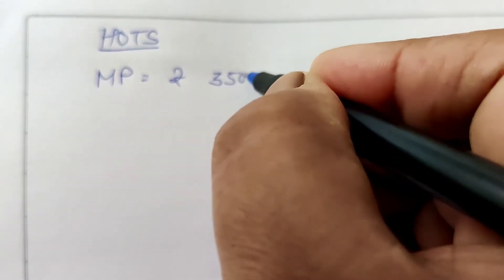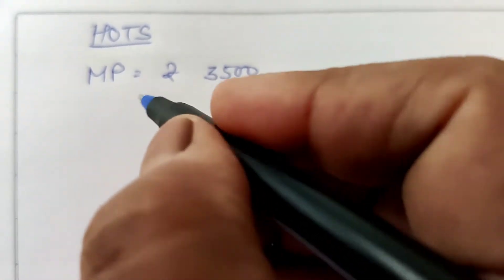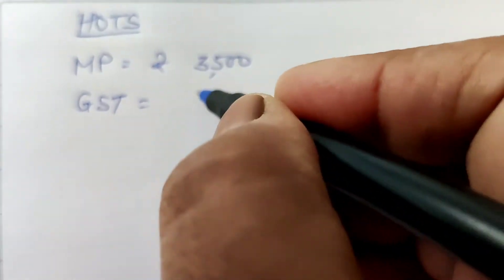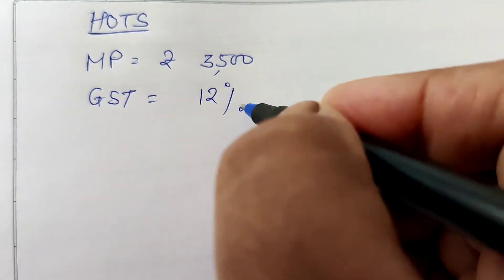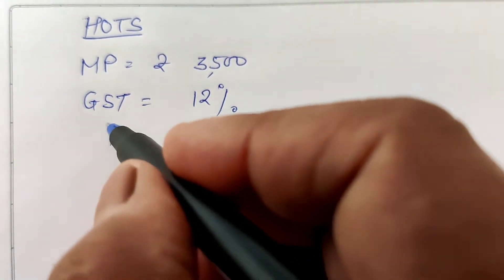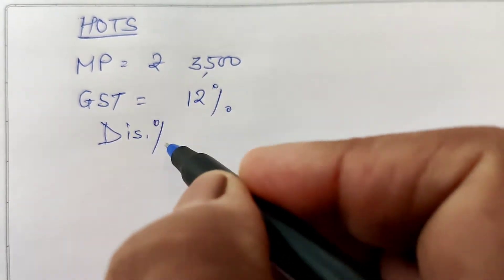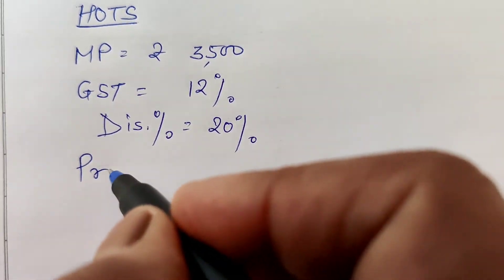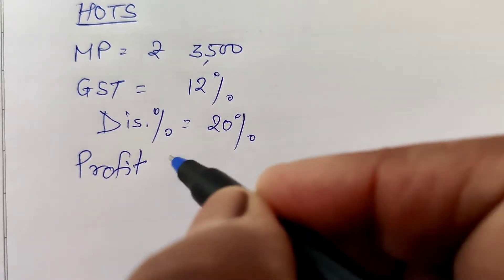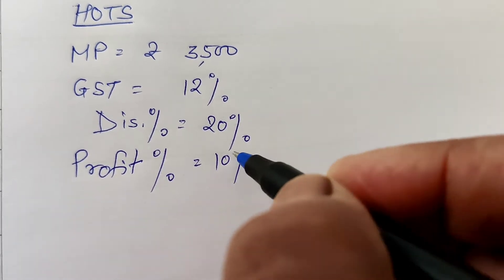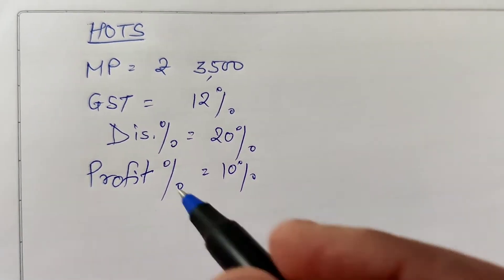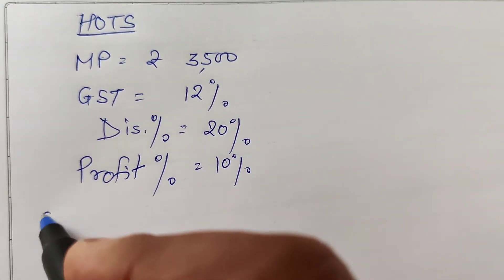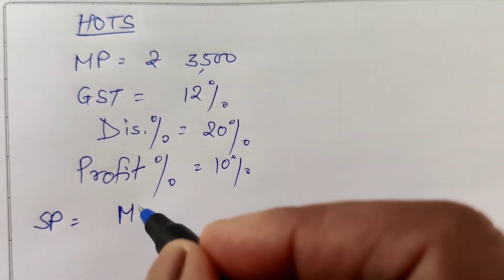Mark price equals rupees 3500, GST percentage is 12 percent, discount percent equals 20 percent, and profit percent equals 10 percent. Now first we have to find the selling price.